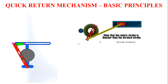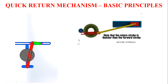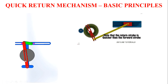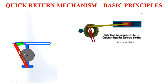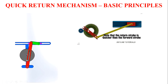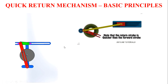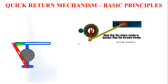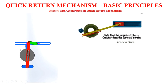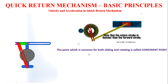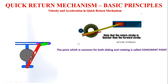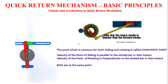Analyzing velocity and acceleration in quick return mechanisms is quite challenging because we have one point which acts as both a sliding pair and a turning pair. If we consider the crank, there is a rotating element, but at the same time it is a sliding element in the slotted bar. So the same point will have both a rotating moment and a sliding moment in this mechanism. That point is called the Coincident Point — named so because the same point is sliding in the slotted bar while at the same time turning in the crank.